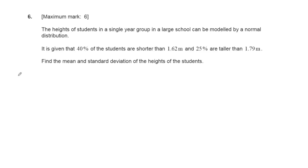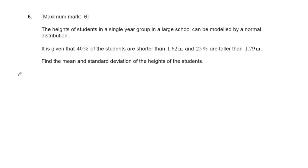The question is about the normal distribution. The height of students in a single year group in a large school can be modeled by the normal distribution. It is given that 40% of the students are taller than 1.62m and 25% are taller than 1.79m. Find the mean and the standard deviation of the height of the students.